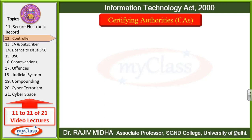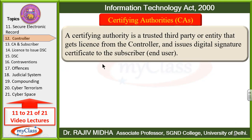Sabse pahle understand karte hain — Certifying Authorities kya hai. A certifying authority is a trusted third party or entity that gets a license from the controller. Certifying authority ek vishwaasni third party hai jis ke upar bharosa kiya gaya hai, aur controller ne isse license diya hai, so that it issues digital signature certificates to the subscriber.